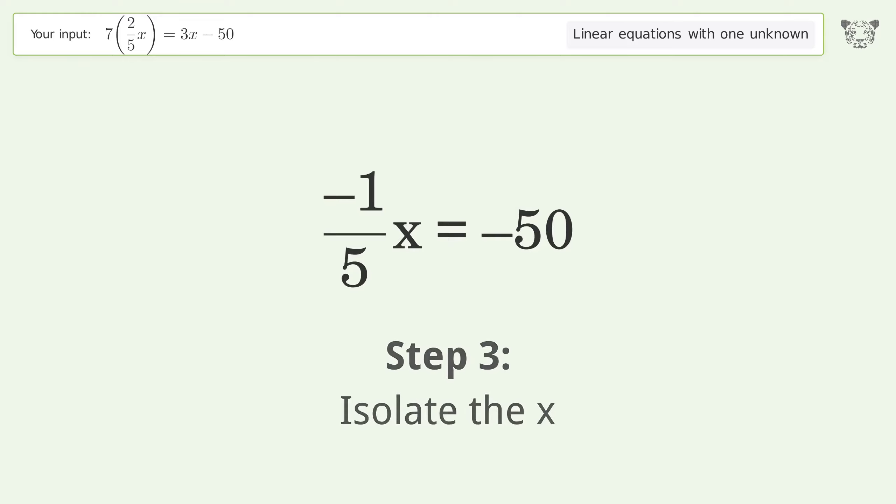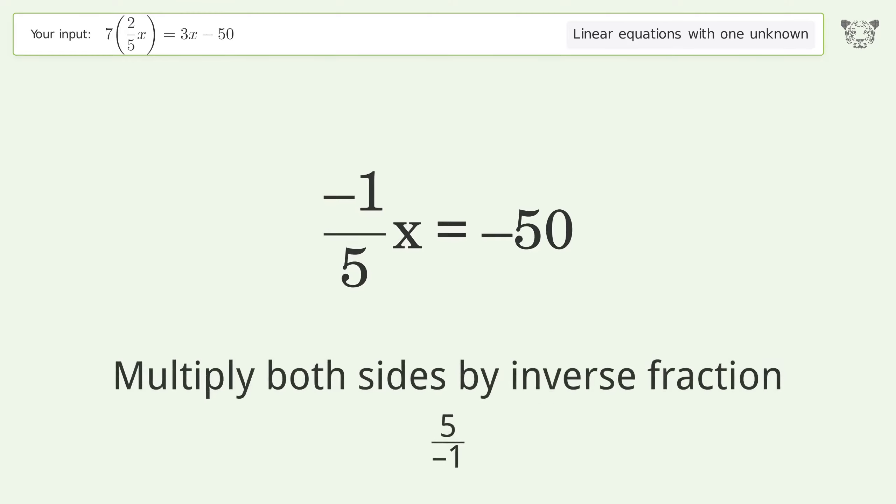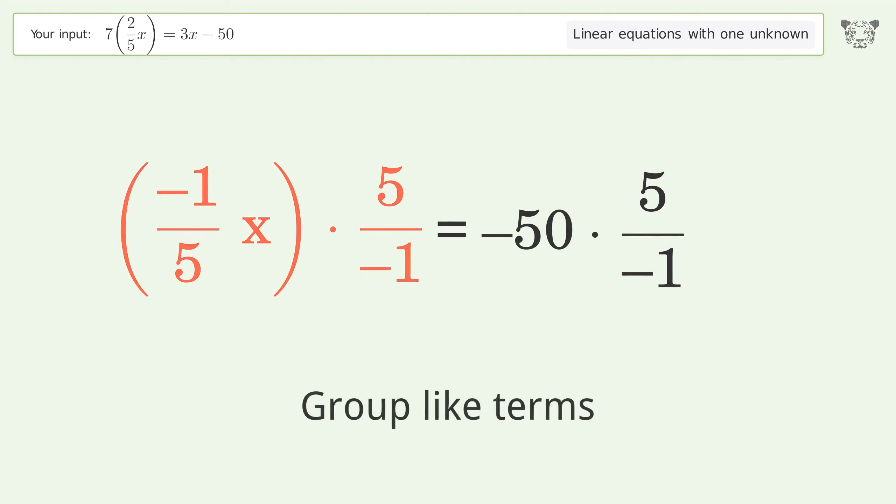Isolate the x. Multiply both sides by the inverse fraction, 5 over negative 1. Group like terms.